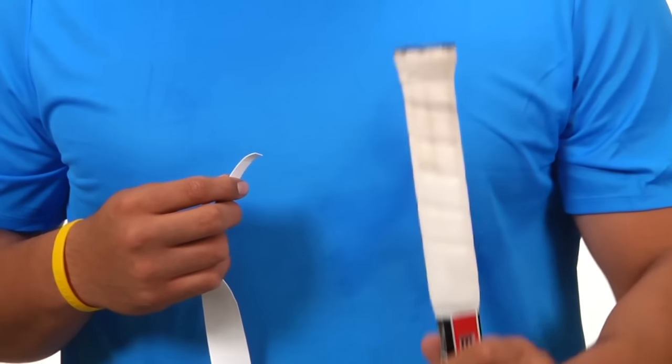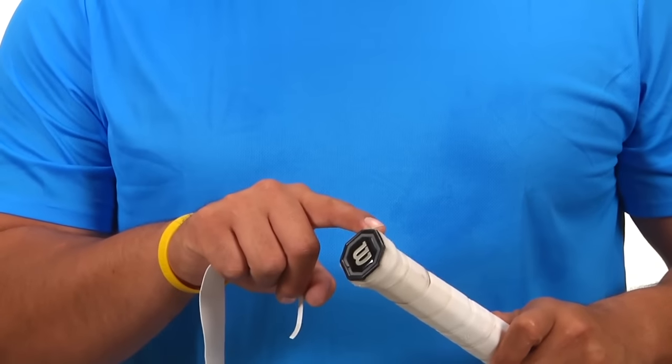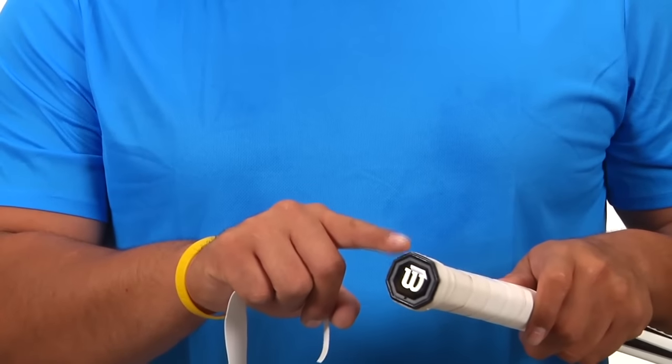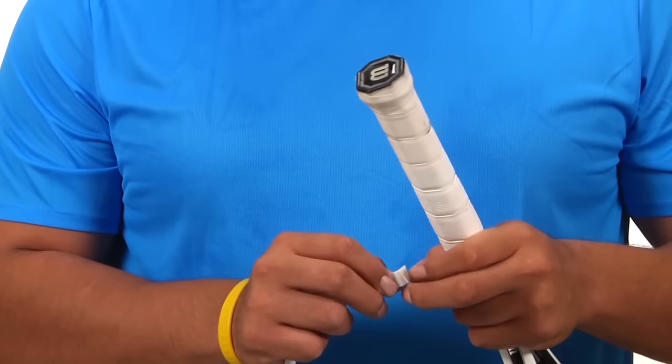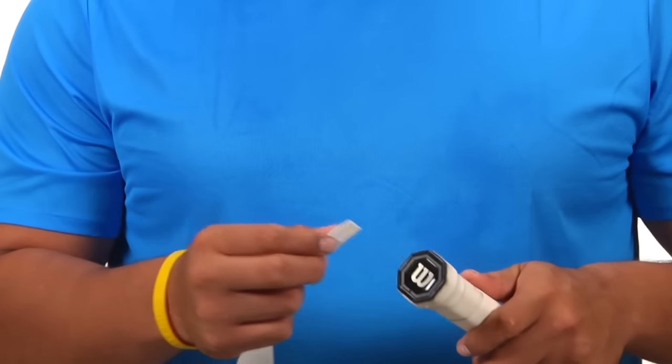Grab your racket and what you want to do is start at one of the corners. Don't start right at the top, at one of the corners. Once you get the tip of your over grip, place it at the corner and start winding it down from left to right.